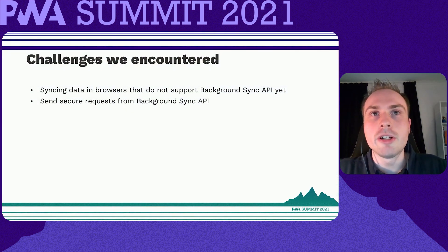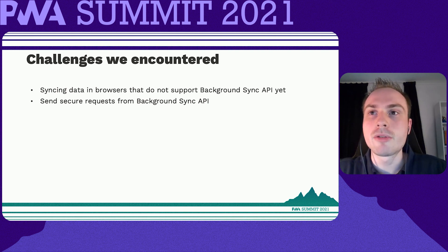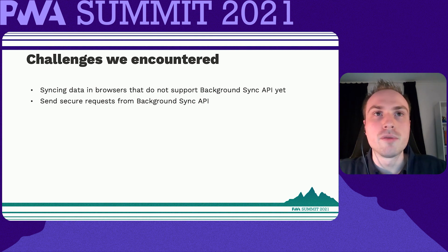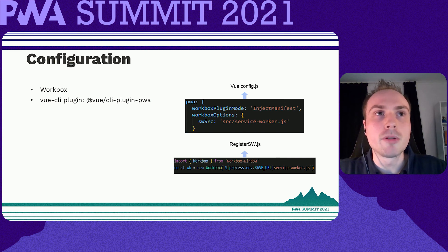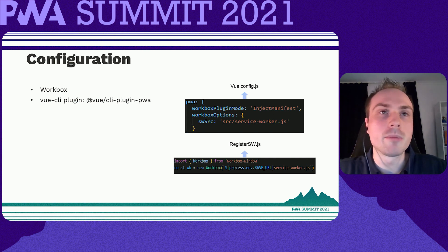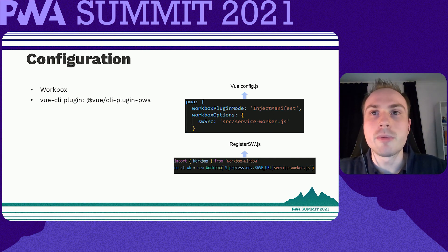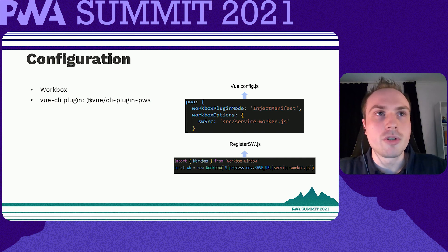Let's talk about the background sync API. Some challenges we encountered: how do you synchronize data in browsers that do not support background sync API, and how do you send secure requests from the background sync API? We solved the first challenge quickly by using Workbox — a library that's very handy for implementing background sync API, with many out-of-the-box features and a built-in fallback system. To use Workbox, you must configure it first using the Vue CLI plugin.